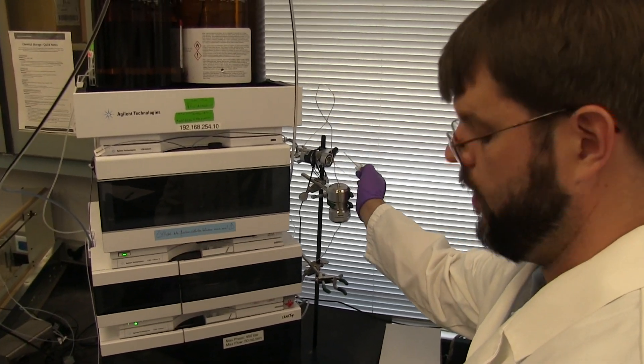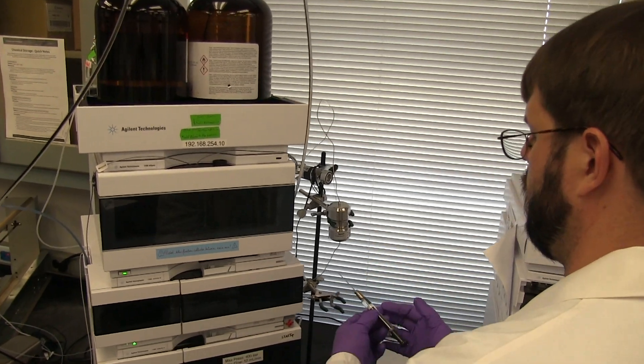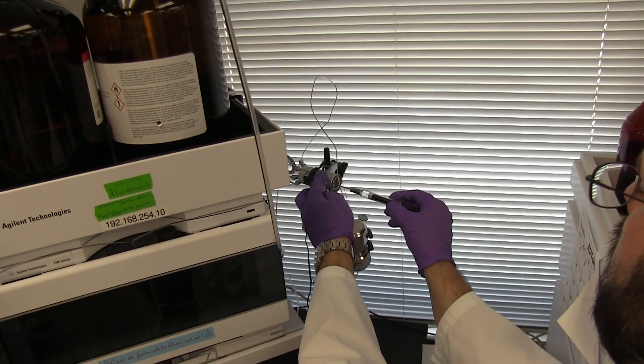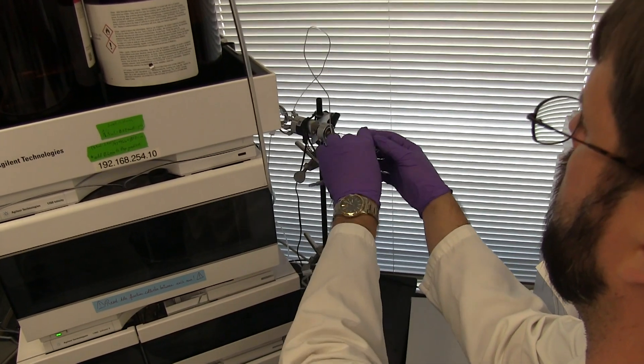The manual injector operates just like normal. The lever is in the load position and then we insert the syringe and fill the injection loop with our sample.